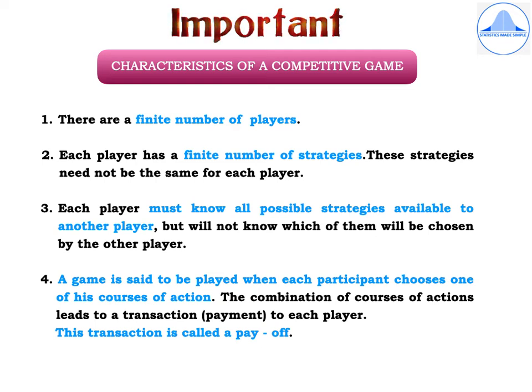I will now explain the characteristics of a competitive game, which is an important two marker. First, there should be a finite number of players. Second, each player has a finite number of strategies, and these strategies need not be the same for each player. Third, each player must know all possible strategies available to another player, but will not know which of them would be chosen by the other player. Fourth, a game is said to be played when each participant chooses one of their courses of action. The combination of courses of action leads to a transaction — a payment to each player — and this transaction is called a payoff.